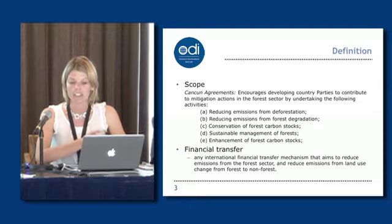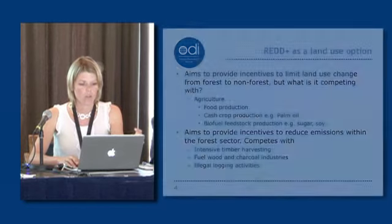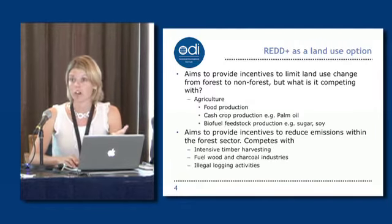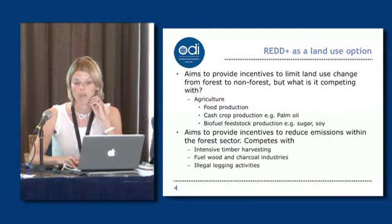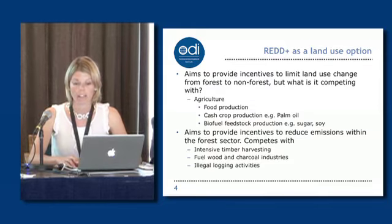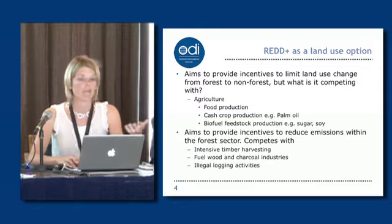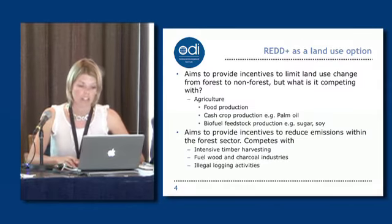REDD is another land use option and will be competing with things like agriculture for biofuels, food production, or cash crop production. REDD is also intended to improve practices within the forestry sector, but that will have to be competitive with other potential uses of forests, including intensive timber harvesting, fuel and charcoal industries, and illegal logging.